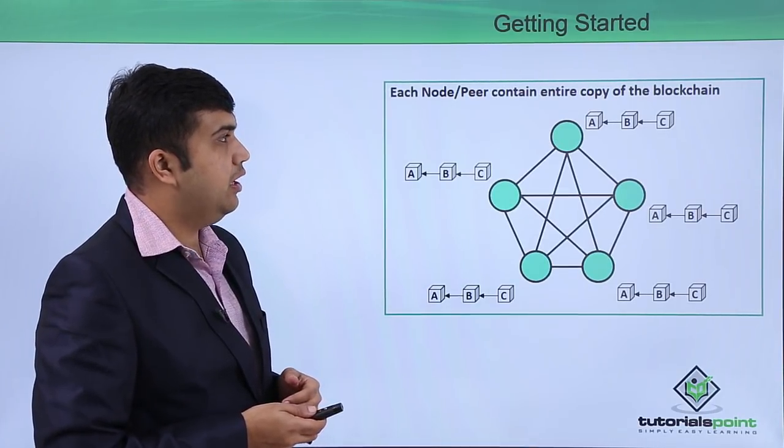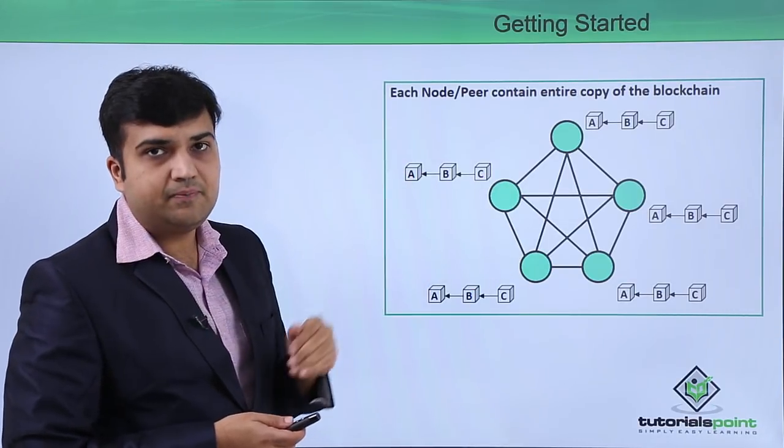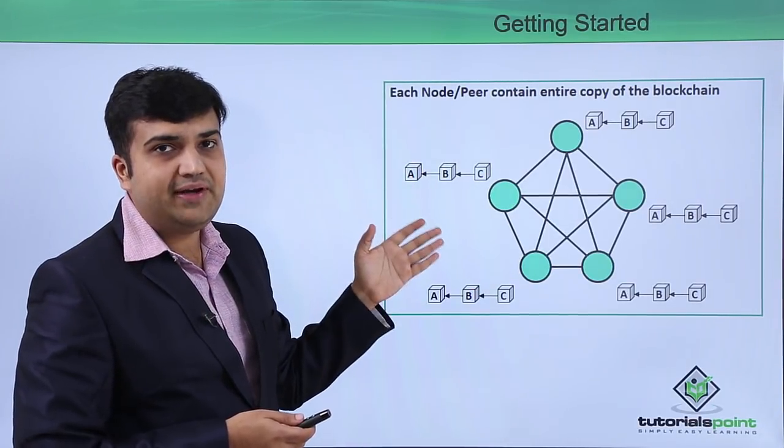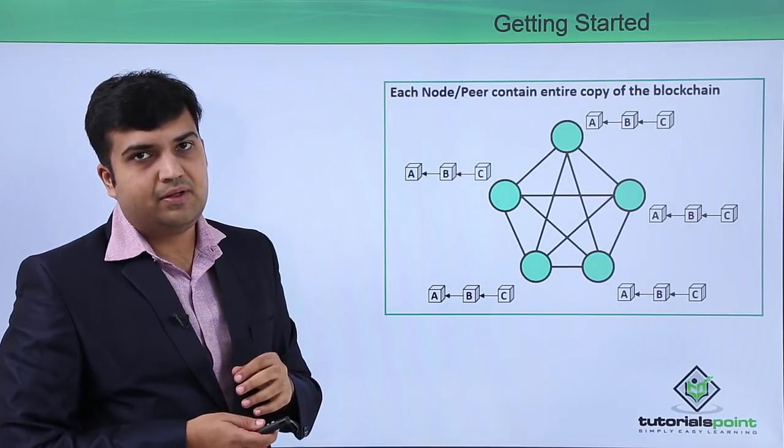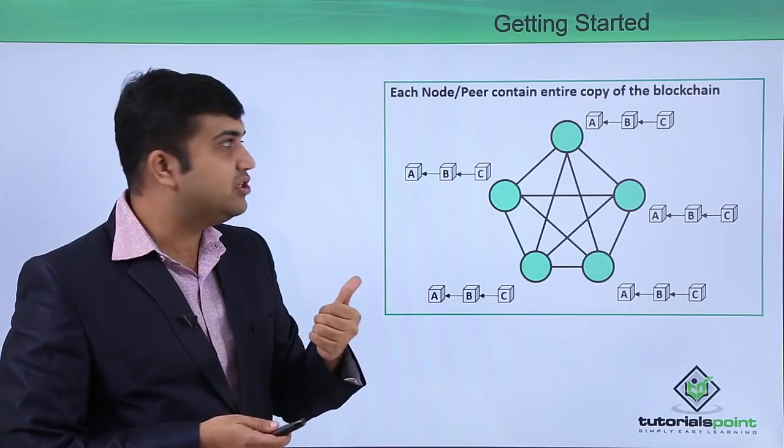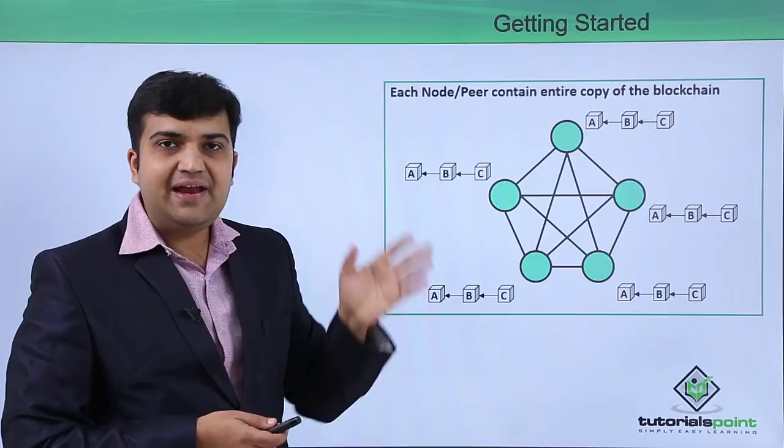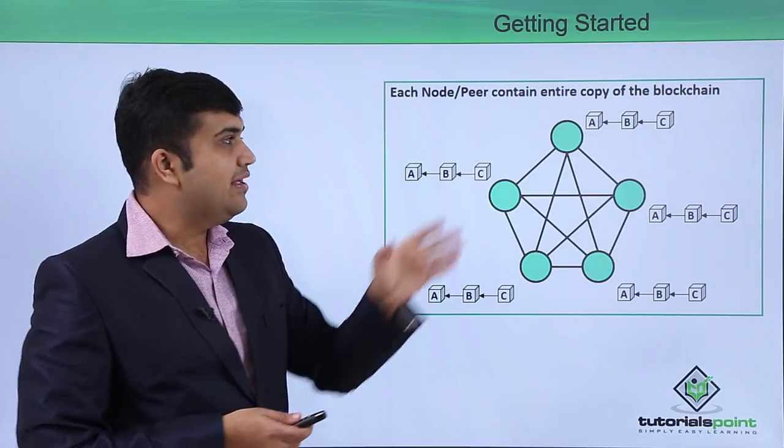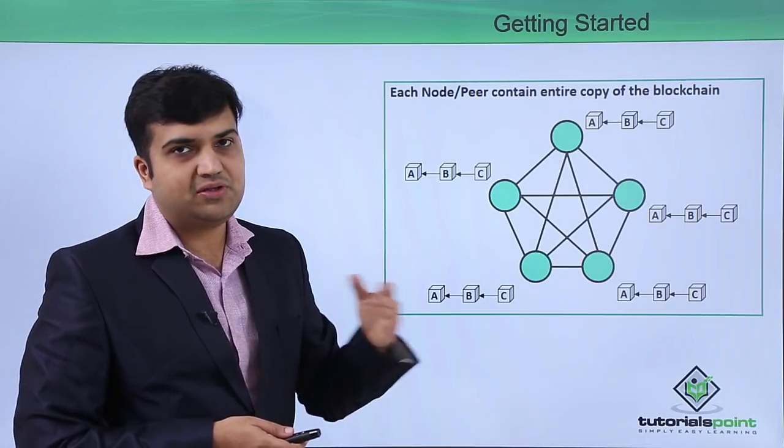Let's say these are the nodes of the network. Each node of the network will have the entire copy of the blockchain. For example, if we have three blocks in the blockchain—A, B, and C—and we have five nodes in the network, then each of the nodes will have all three copies of the blockchain.